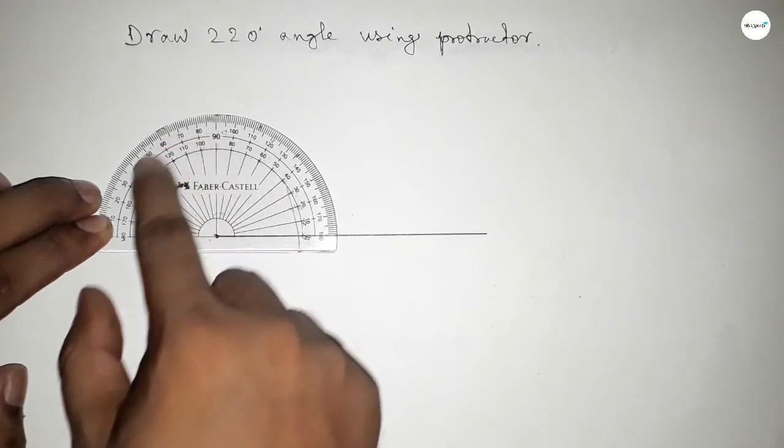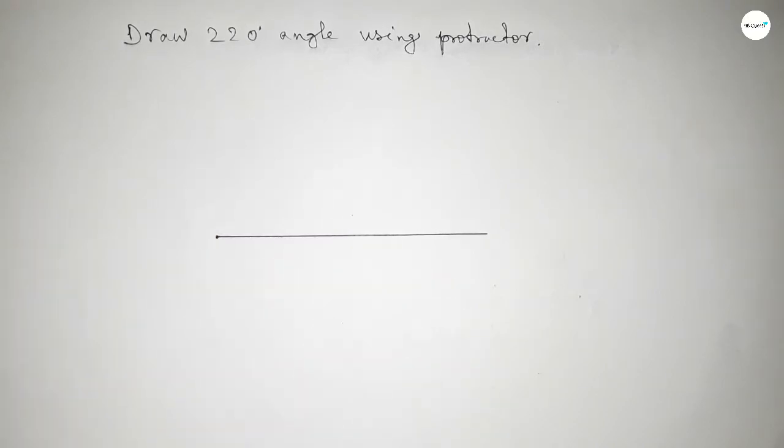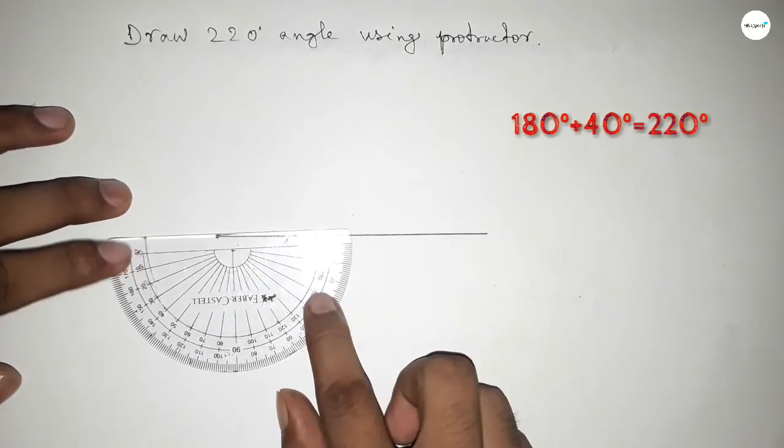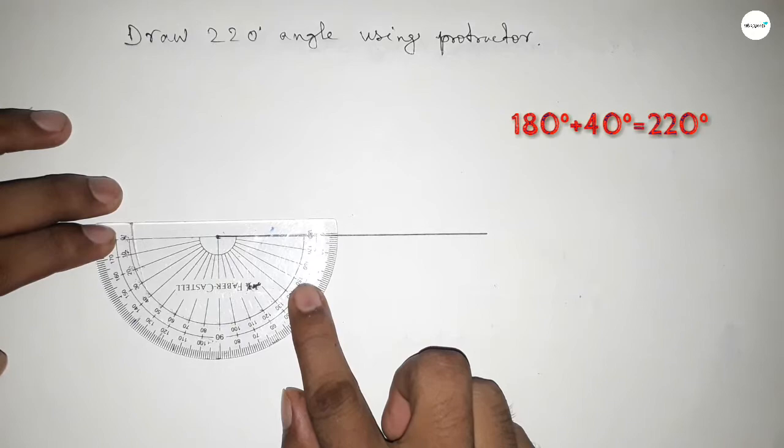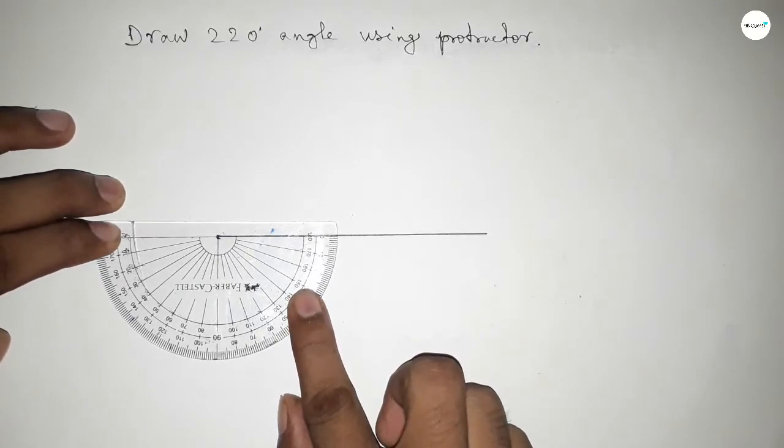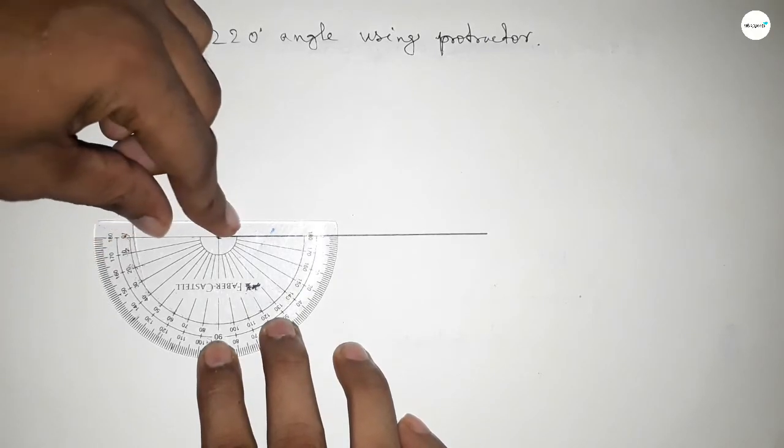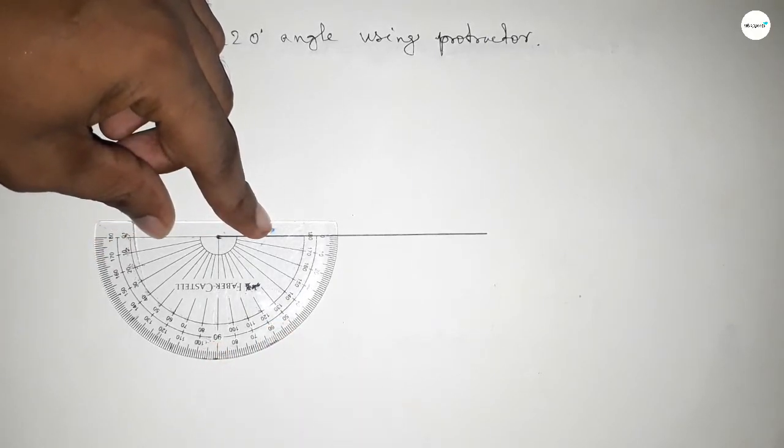Up to this is 180 degrees. So we have to draw a 220 degree angle. If we add an extra 40 degree angle with 180 degrees, then we can get 220 degrees. So putting the protractor by this way on the line perfectly, then joining extra 40 degrees with 180 degrees.